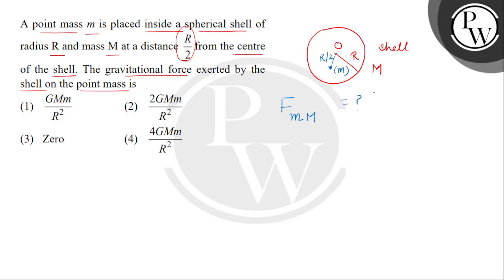So bachyon as we know ki shell ke under, shell ke poore interior area mein hum R less than R agar consider kar lein, the gravitational force is equal to zero. Or we can understand it better that gravitational field shell ke under, inside field mein kya ho jayega? Zero.